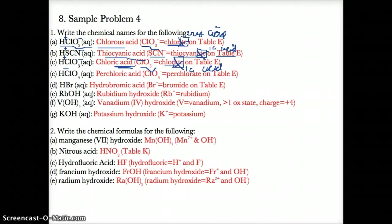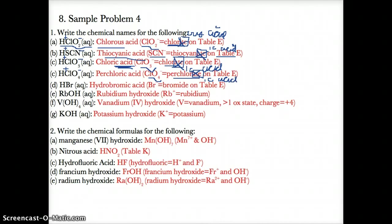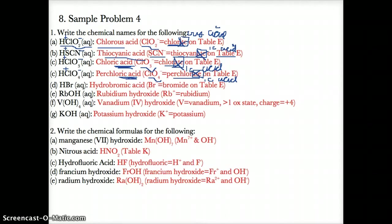For HClO4, it's H+ in front followed by ClO4- in the back. ClO4- is perchlorate on table E. Since the polyatomic ion has an -ATE ending, cross it out and replace it with -IC acid. Since -ATE is replaced with -IC acid, we get perchloric acid.